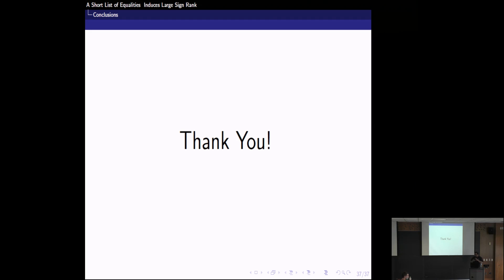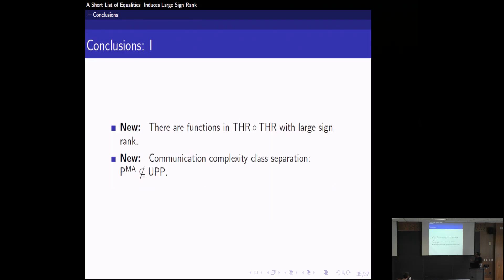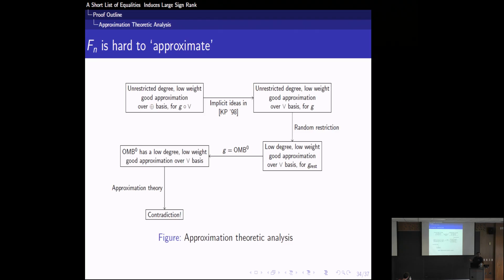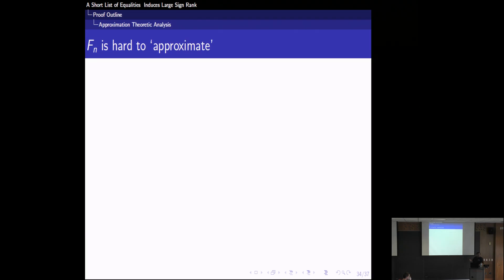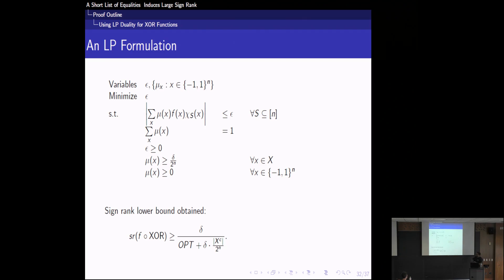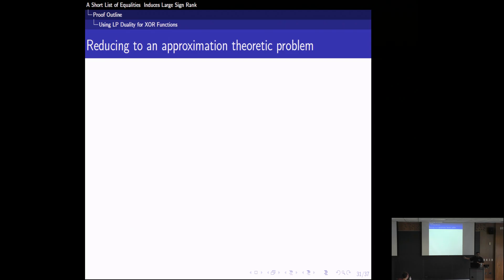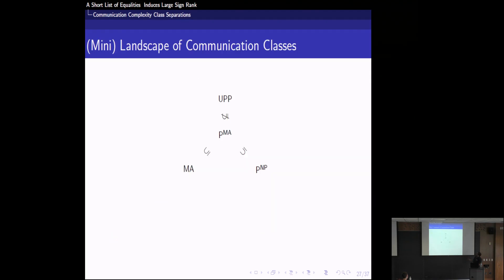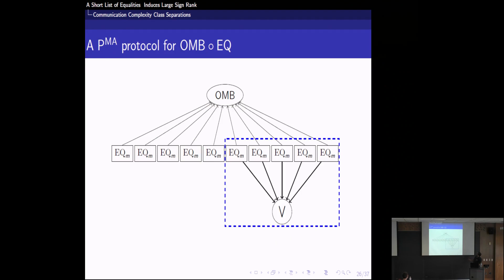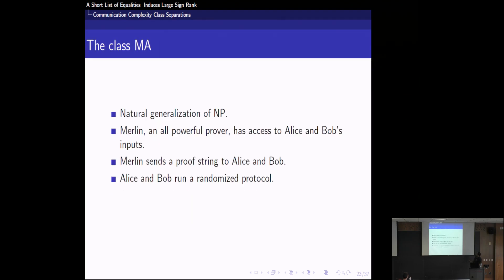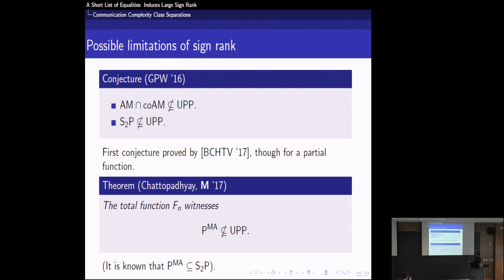Question: Is the next class up from P^MA the class S2P, and is S2P separated from UPP? Answer: P^MA is contained in S2P, so our function is in S2P, meaning S2P is not contained in UPP either — that separation follows from our result.